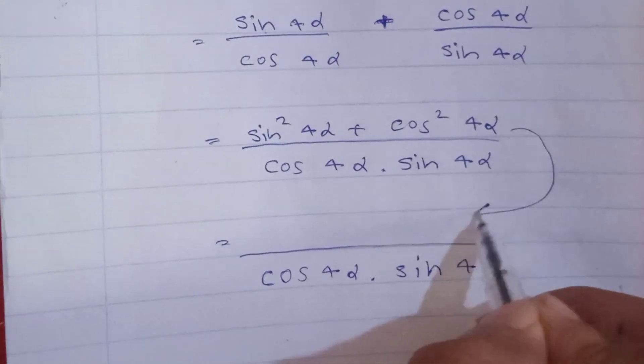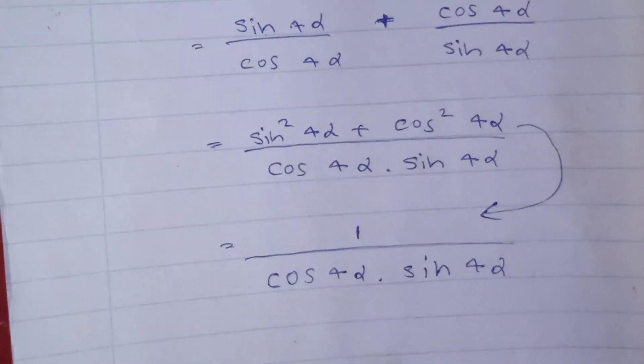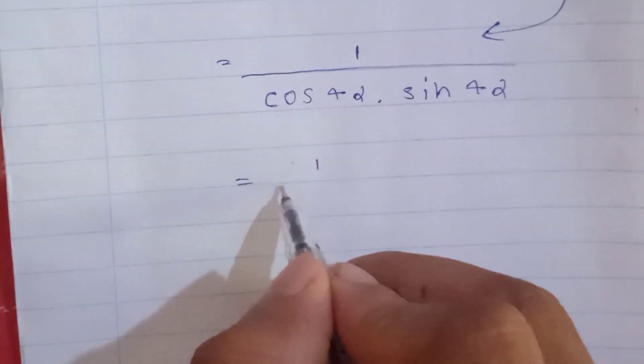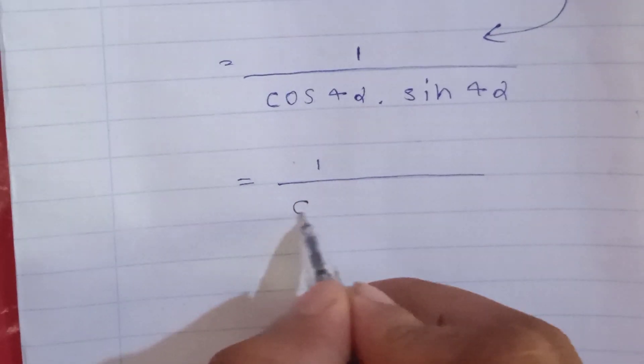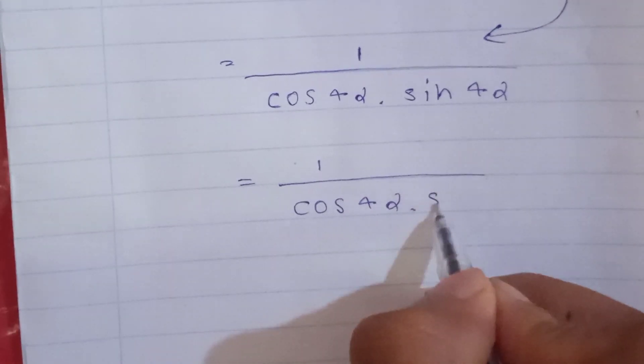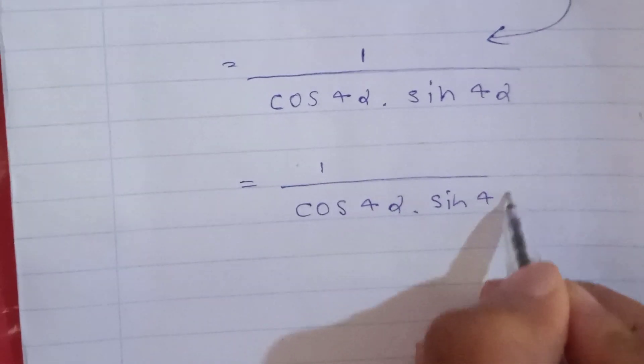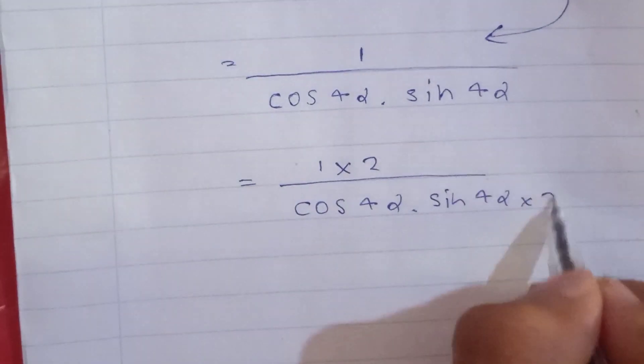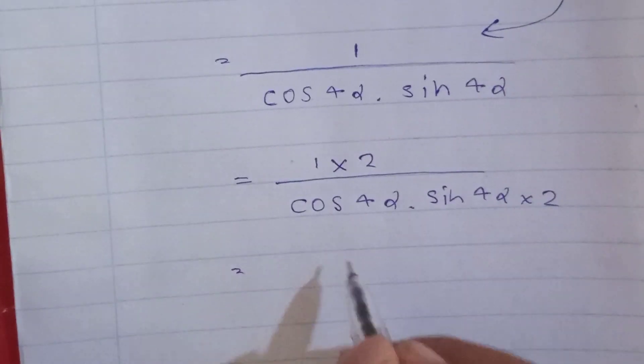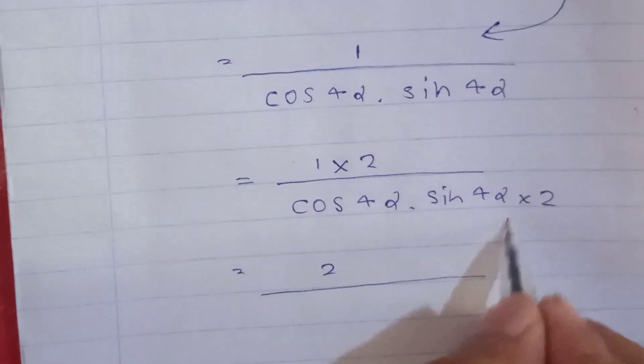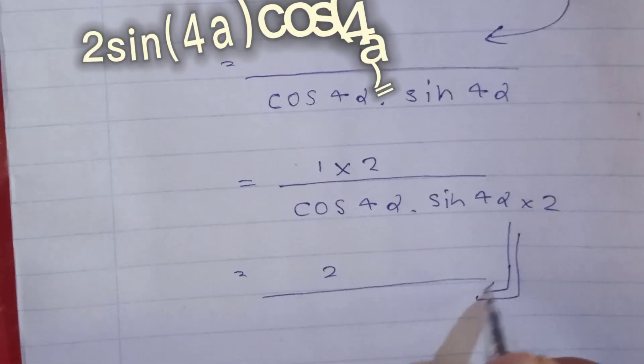Here you can see a basic trigonometric theorem. The numerator equals 1, and at the denominator we can apply the sin 2θ theorem.